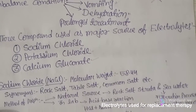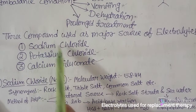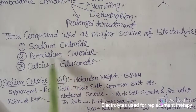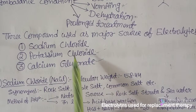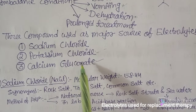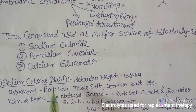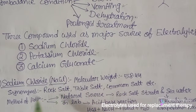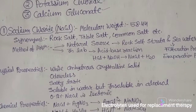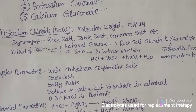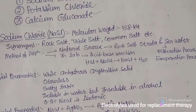There are three compounds used as major sources of electrolytes. The first is sodium chloride (NaCl), the second is potassium chloride (KCl), and the third is calcium gluconate. These three compounds can be used as a major source of electrolytes or to balance the electrolytes. Let us discuss them one by one, starting with sodium chloride.